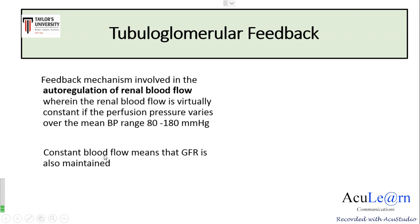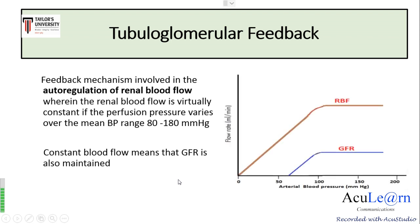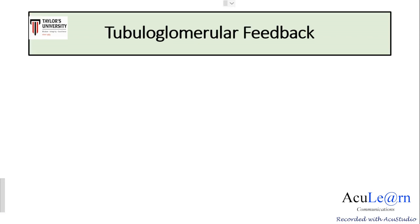The significance of this feedback is that it maintains constant blood flow, and if blood flow is constant, the GFR is also maintained. In the graph, you can observe that both renal blood flow and glomerular filtration rate remain constant over the mean blood pressure range of 80 to 180 mmHg. This intrarenal process is called the tubuloglomerular feedback.